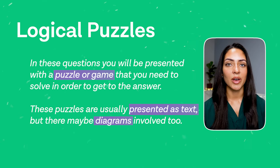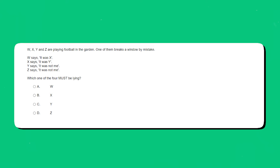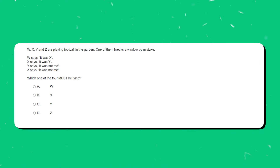Let's have a look at how this works in practice. W, X, Y and Z are playing football in the garden. One of them breaks a window by mistake. W says it was X. X says it was Y. Y says it was not me. Z says it was not me. Which one of the four must be lying? Take a minute to try and work through this puzzle yourself.